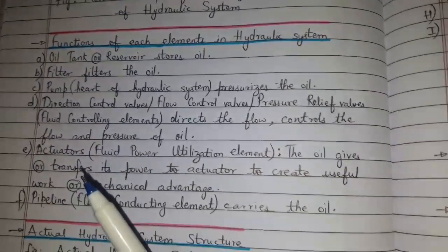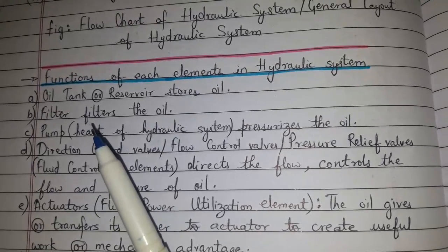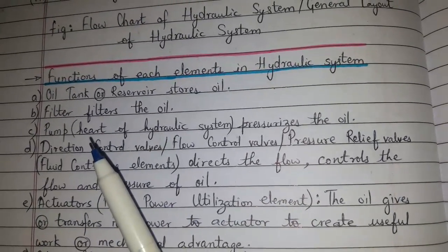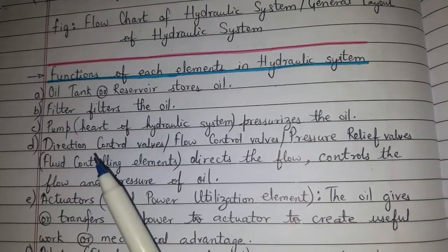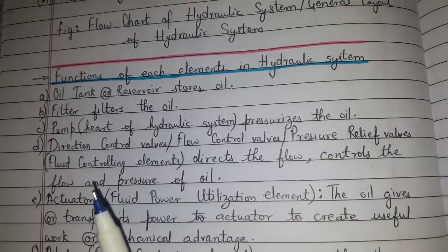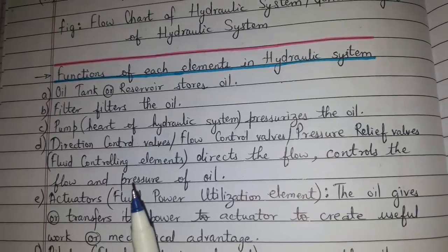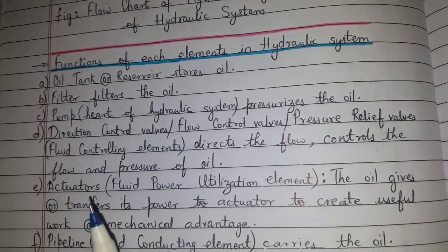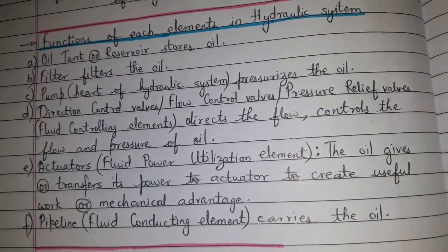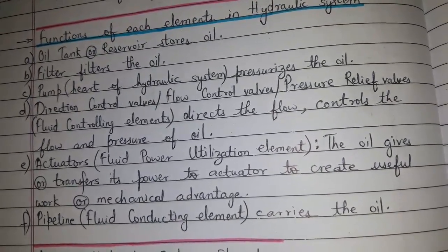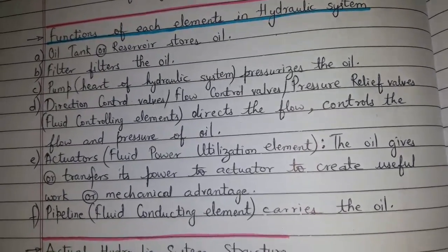Function of each element in hydraulic system. Oil tank or reservoir stores oil. Filter filters the oil. Pump, which is the heart of hydraulic system, pressurizes the oil. Directional control valve, flow control valve, and pressure relief valve — also called fluid controlling elements — direct the flow and control the flow and pressure of oil. Actuators, which is the fluid power utilization element: the oil gives or transfers its power to the actuator to create useful work or mechanical advantage. Pipeline, the fluid conducting element, carries the oil.